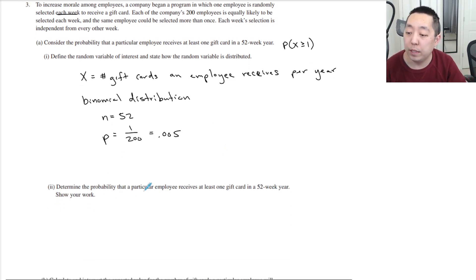Now, determine the probability that a particular employee receives at least one gift card. So that means I want the probability that X is greater than or equal to one. It's easier to do the complement. That's one minus the probability that he doesn't get any gift cards at all.